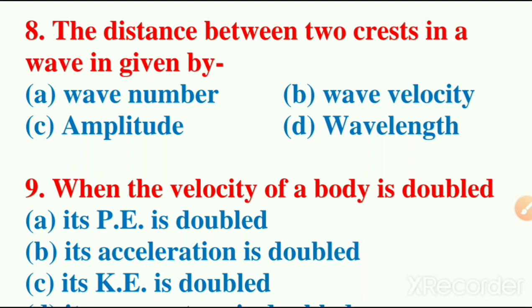Eighth question: the distance between two crests in a wave is given by? Options are wave number, wave velocity, amplitude, wavelength. The correct answer is option D, wavelength.